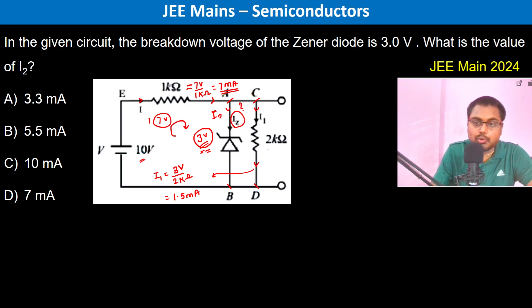Therefore, 5.5 milliampere, which is 7 minus 1.5, must be flowing through I2. Thank you.